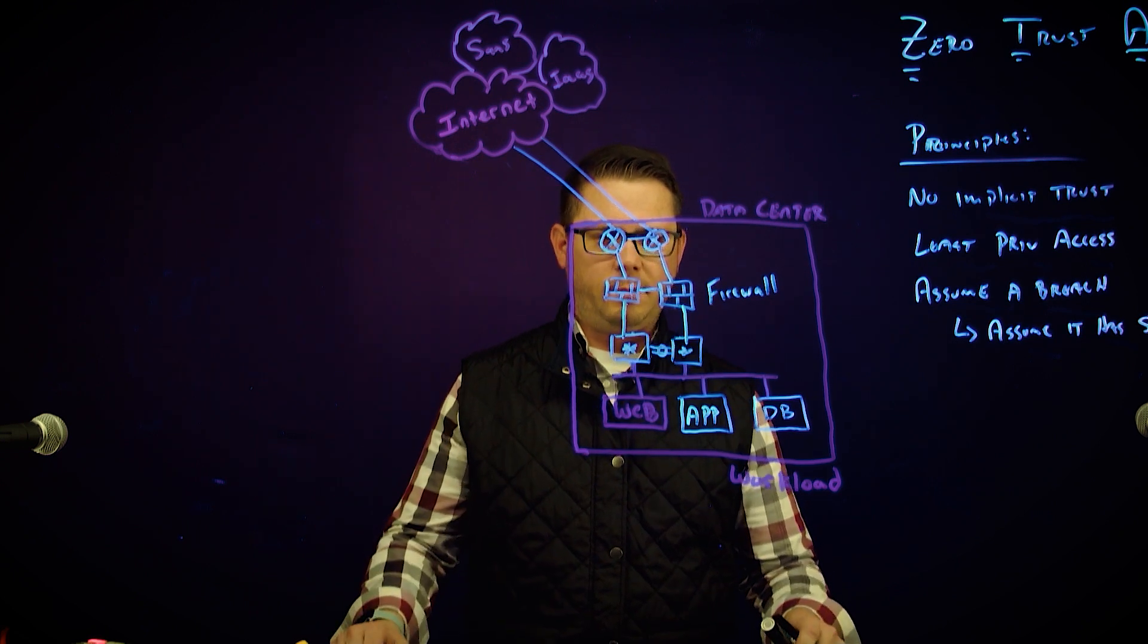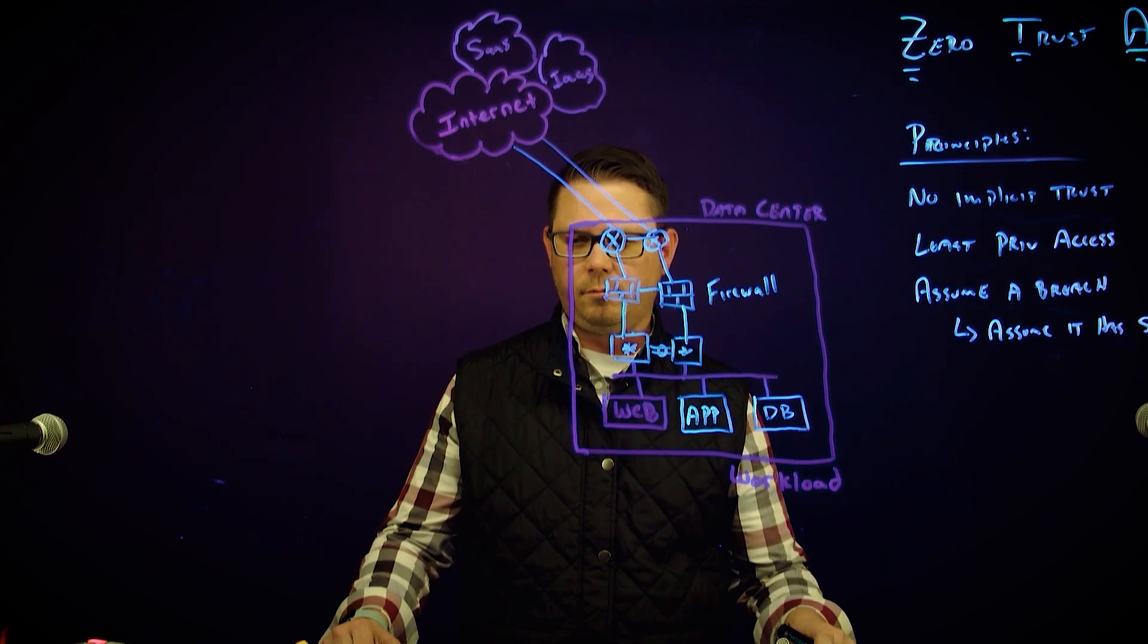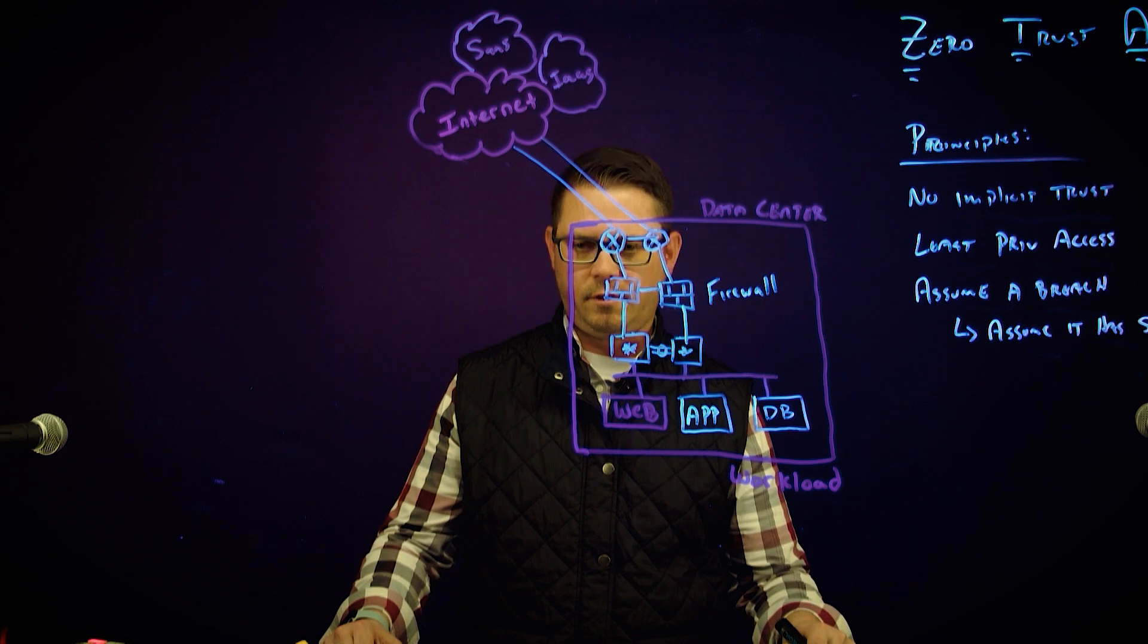In addition to that, maybe we leverage some routing technologies like VRFs and insert firewalls to perform some east-west inspection within the data center.